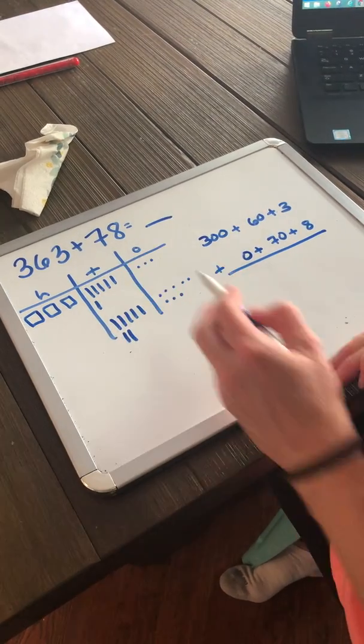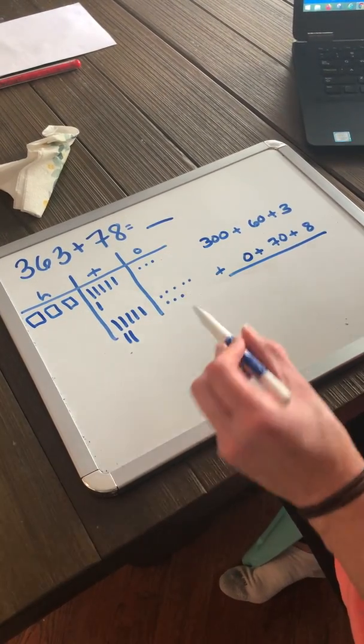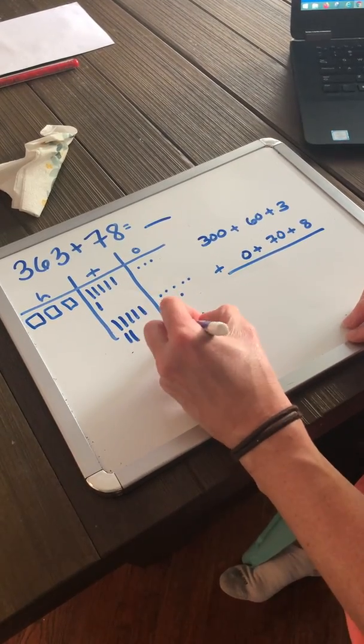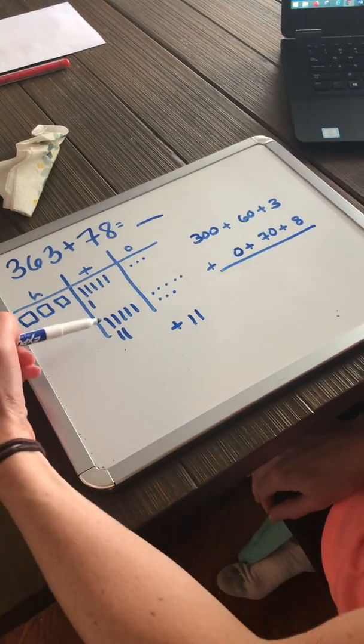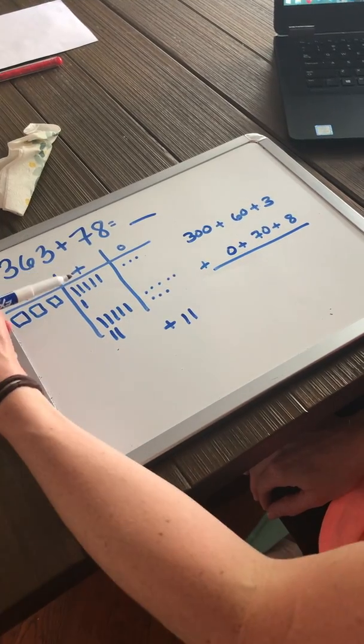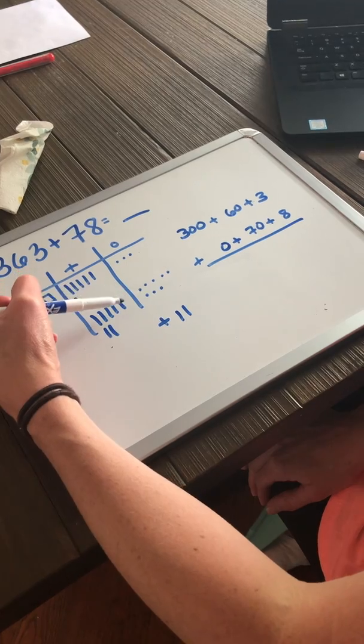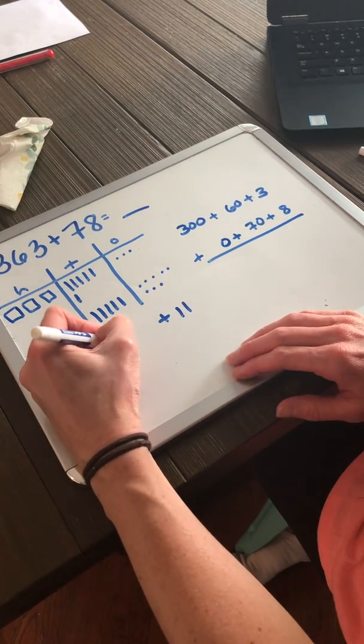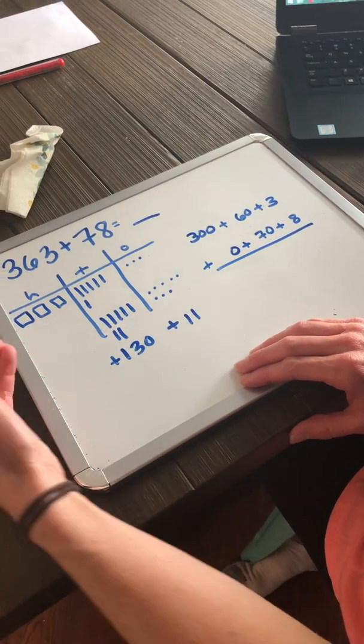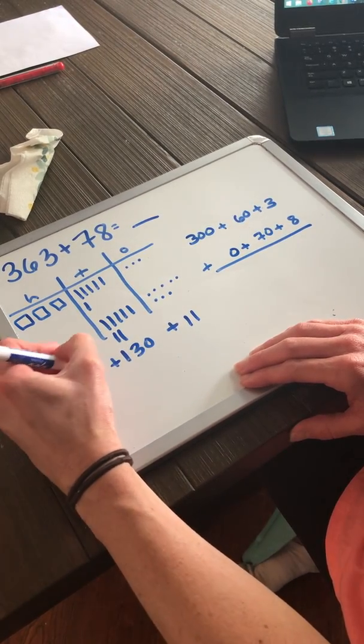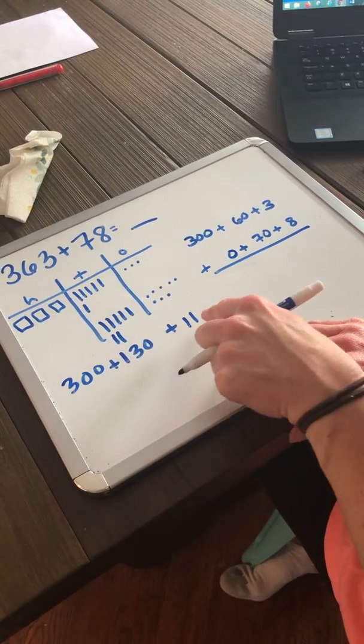Now let's combine our like values. 8 1s plus 3 1s is 11 1s. 6 10s plus 7 10s. Ooh, that's a lot. 10, 20, 30, 40, 50, 60, 70, 80, 90, 100, 110, 120, 130. That's a lot. And then I've got 300s. So I've got 300 plus 130 plus 11.